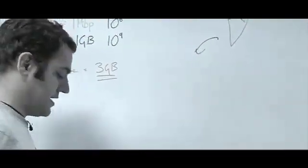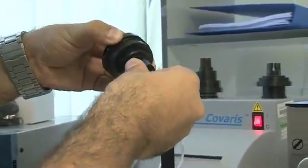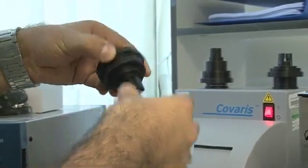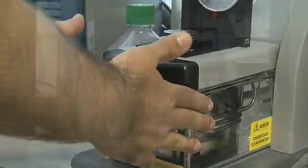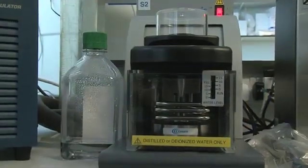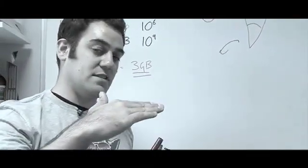We then take that DNA and we sonicate it. We actually use a machine that produces sound waves to break the DNA down in a very controlled way into a size which we need to do the sequencing with. And this machine essentially uses controlled sound waves, and you set the parameters so you get a range of sizes that you're interested in.